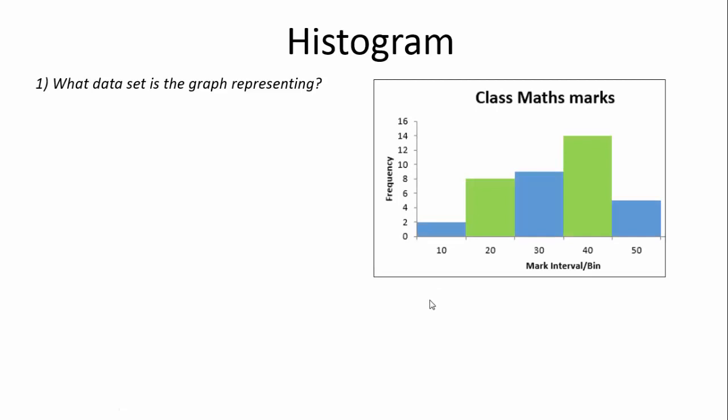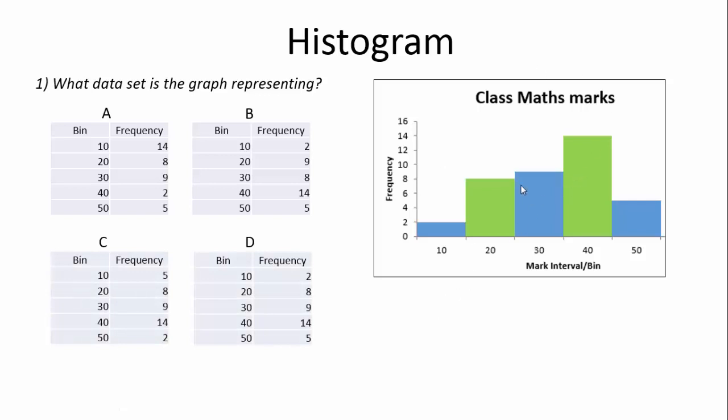So what data set is this graph here representing? Either A, B, C, or D? Let's have a look at this graph. We have our class maths marks. And this is the frequency of how many students got a mark between 0 and 10, 11 and 20, 21 and 30, 31 and 40, and 41 to 50. So the max mark was 50. This will be 50 and this will be 0. So let's look at the frequency for bin 10. 14. Oh, we can immediately see that it was not 14. There were only two people who got that. That is not it. Let's have a look at D. 2. You know how that looks. It's on 2.